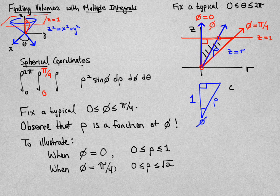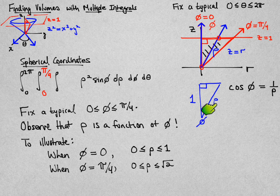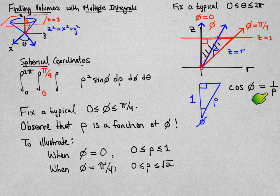But it's this hypotenuse that's varying as I change phi. Well, I can just use trigonometry to find a relationship between how phi and rho are related to each other, and because I know the adjacent side and the hypotenuse is what I want to say something about, cosine of phi is the way to go, and I get cosine is 1 over rho. Solving that for rho, I get secant of phi instead.